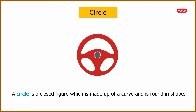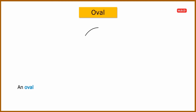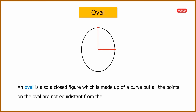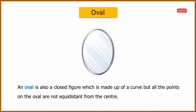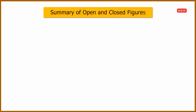An oval is also a closed figure which is made up of a curve, but all the points on the oval are not equidistant from the center. In our daily life we come across many things in oval shapes, such as mirrors and oval tables.